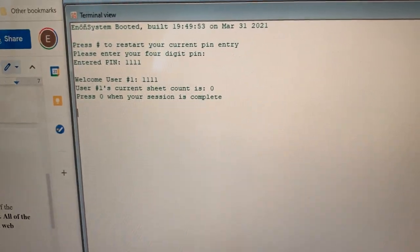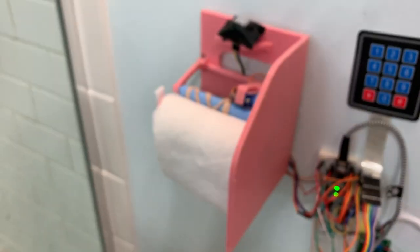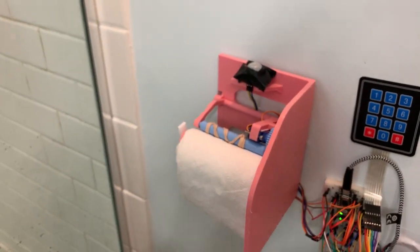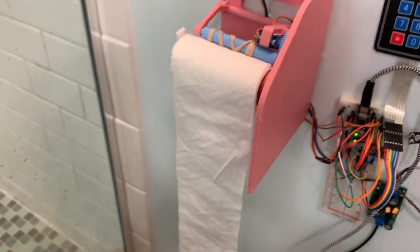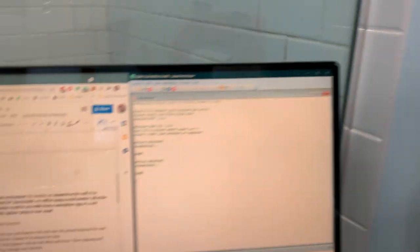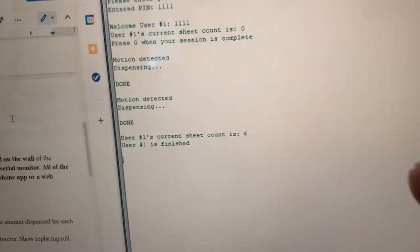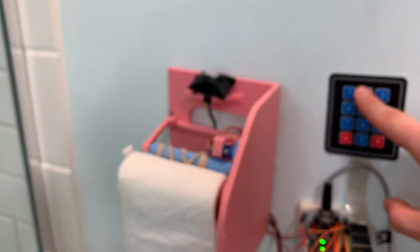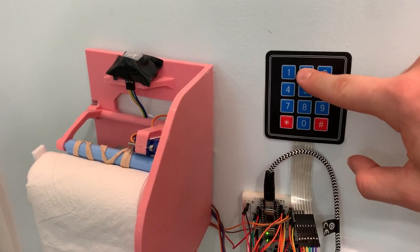Press zero when you want to complete the session. So now the user is free to wave their hand above, it dispenses, I believe six sheets, it's either three or six by default. And then it shows that motion has been detected. To exit, the user presses zero. User one is finished. So it's six per dispense. User one is finished.